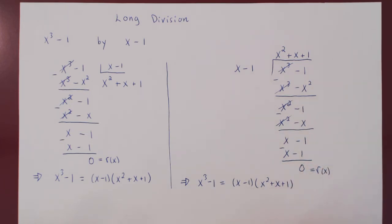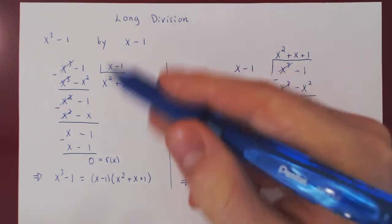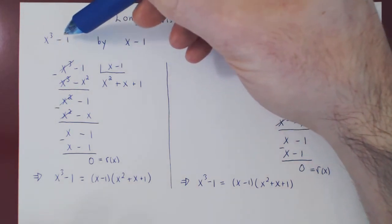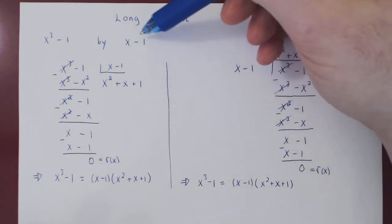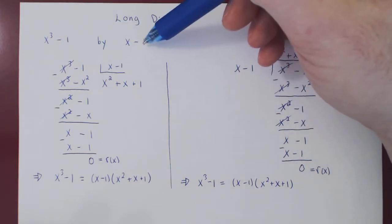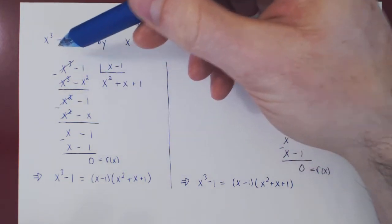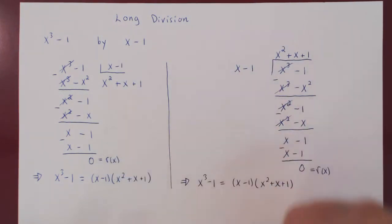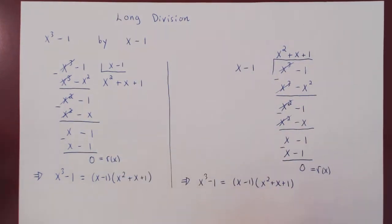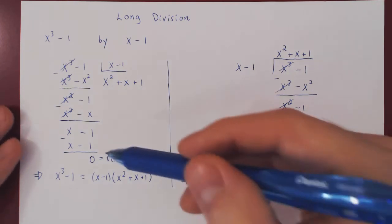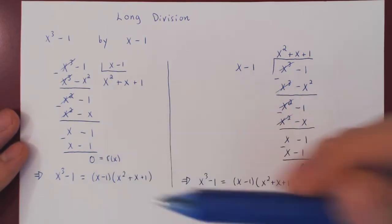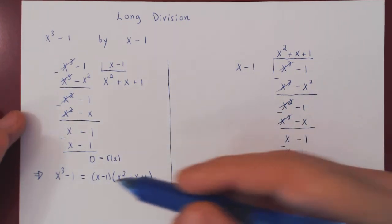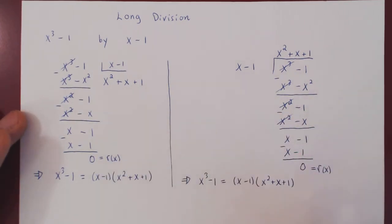And that's it — this is long division when we are dividing a polynomial by another one that is actually a factor of the polynomial, in which case we have a 0 remainder. Let's do one more example of the zero remainder case, and then we'll do another example where the remainder is non-zero.